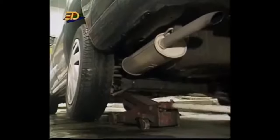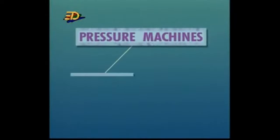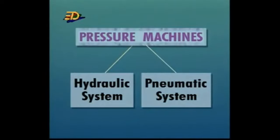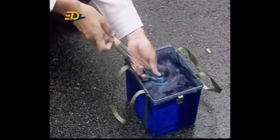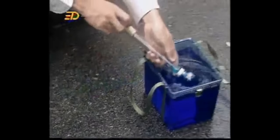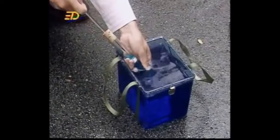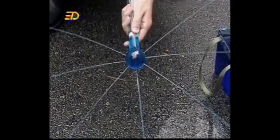Machines and tools help us to do work, and many of these are pressure machines using either hydraulic or pneumatic systems. To understand a hydraulic system, we need two facts. First, when a liquid is enclosed in a space and pressure is applied, this pressure is transmitted equally to all parts of the liquid — illustrated by a pressure syringe where pushing the piston causes water to squirt uniformly in all directions.